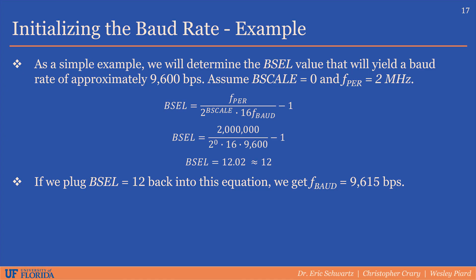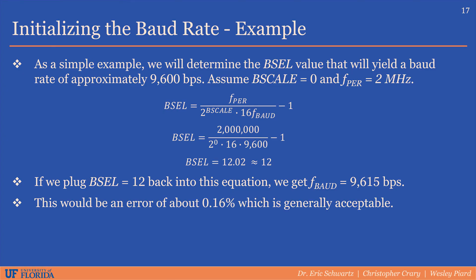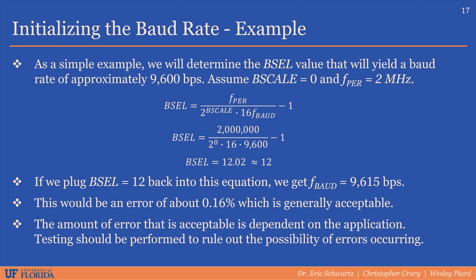Now let's see how close our generated baud rate will be after rounding our baud select value. Plugging 12 back into the equation for baud select, we can calculate the baud rate to be about 9,615 bits per second. This would be an error of about 0.16%, which is acceptable for most use cases. It's important to check the actual baud rate that will get configured, because in some cases if the baud select value has to be heavily rounded, the percent error may be too high, causing transmission problems. The b-scale parameter can be used to fine-tune the baud rate, which would minimize any associated error.